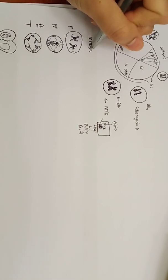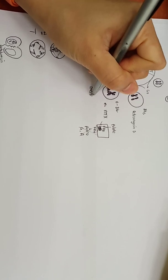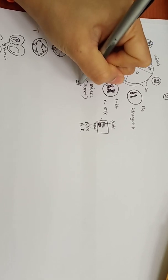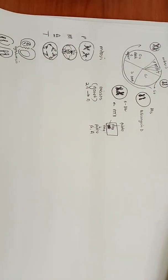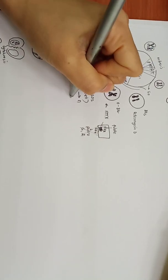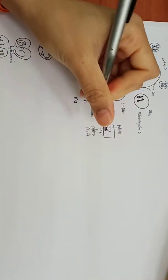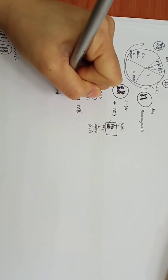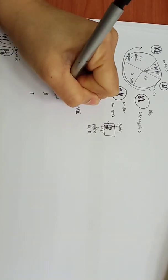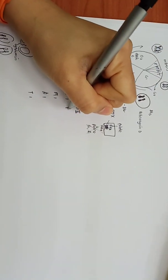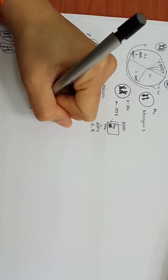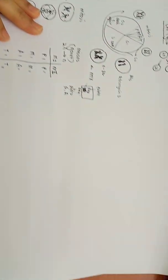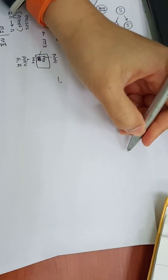In meiosis, the same thing happens, but meiosis only occurs in gametes because we want to reduce the number of chromosomes from diploid to haploid. That is why we have meiosis 1 and meiosis 2, both having the same PMAT phases (PMAT1 and PMAT2), but just to produce haploid cells. Now let's go to gametogenesis.